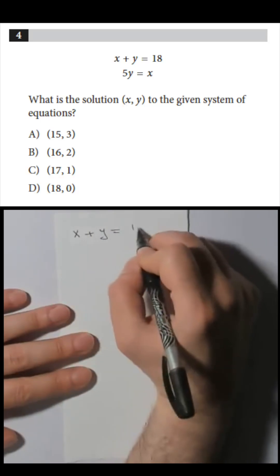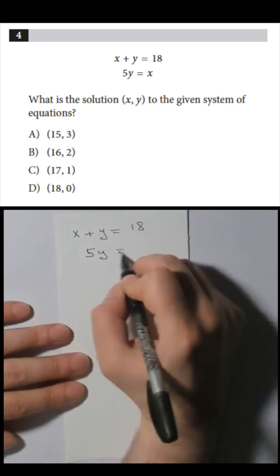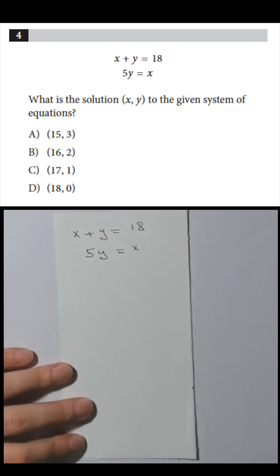Given x plus y equals 18, 5y equals x. What is the solution (x, y) to the given system of equations?